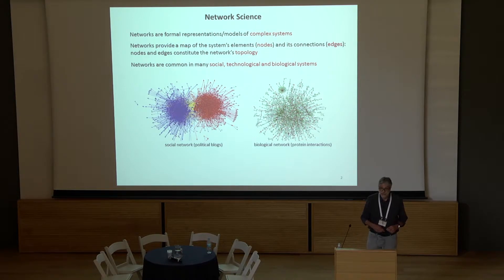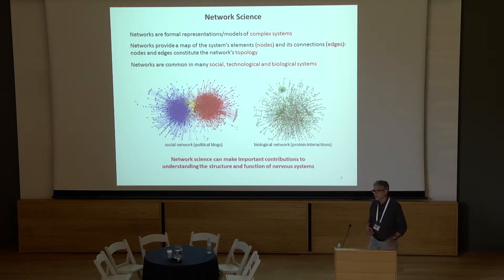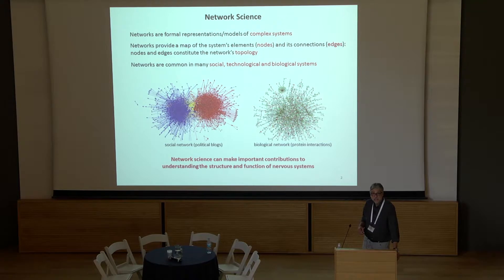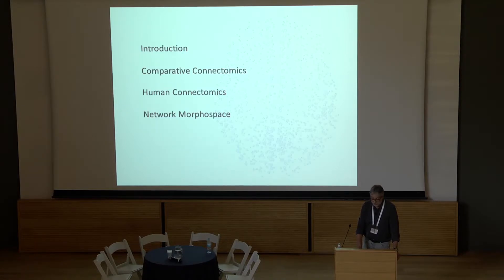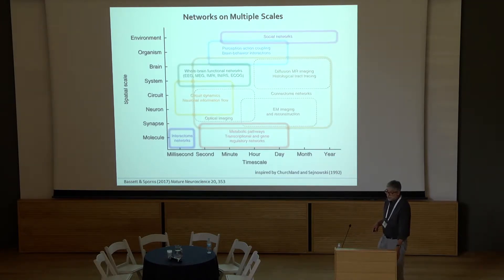Network science approaches have made a lot of impact in many disciplines, from social sciences to technology and the biological sciences — for example, in systems biology. They are now making an impact also in neuroscience, and I want to argue about the potential impact they can have in understanding neurobiological systems, particularly in comparative connectomics. We have at our disposal more and more data sets that are comprehensive, rich, and big in the sense of big data.